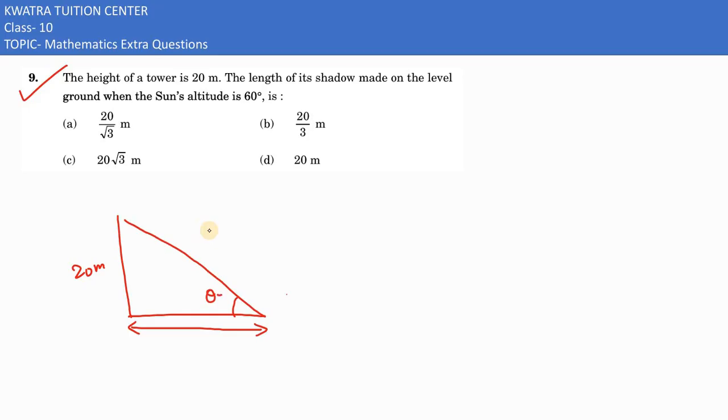This would be my angle theta, which is 60 degrees in this case. And what do we need to find? The base. We need to find the length of the shadow.